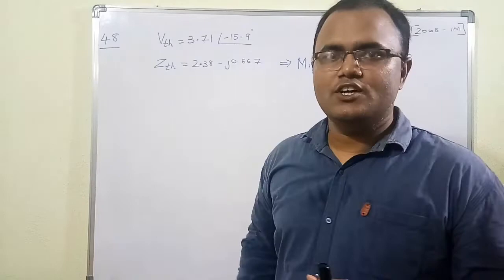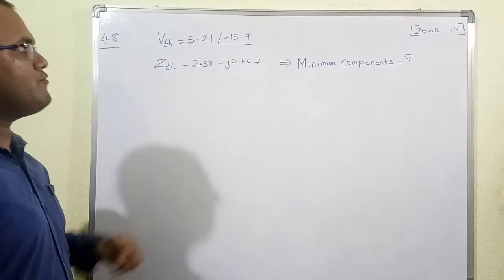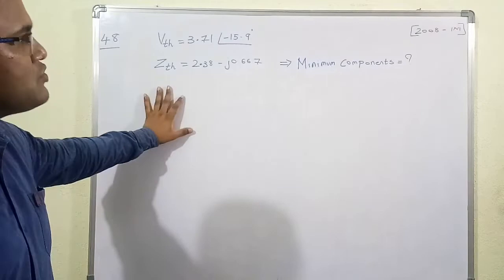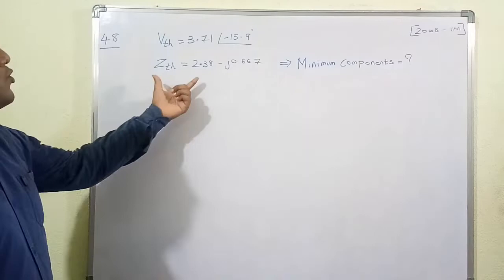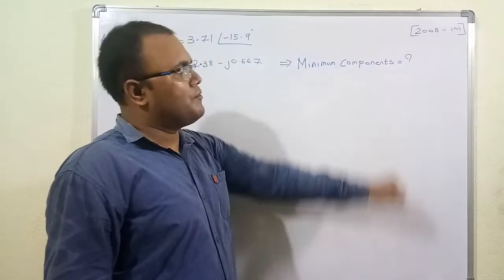Now let's move to problem 48. This question gives a Thevenin voltage of 3.71 at angle minus 15.9 degrees and a Thevenin impedance ZTH of 2.38 minus j0.667. The question is from GATE 2018 for 1 mark. The aim is to find the minimum number of components required to construct ZTH.